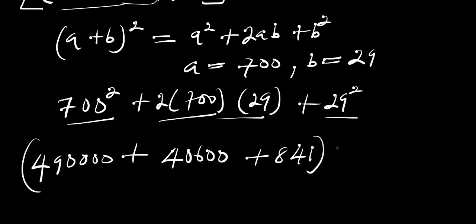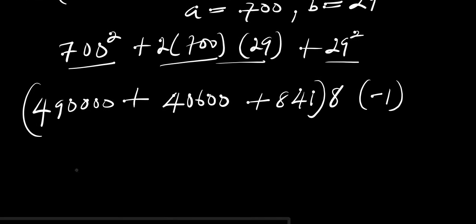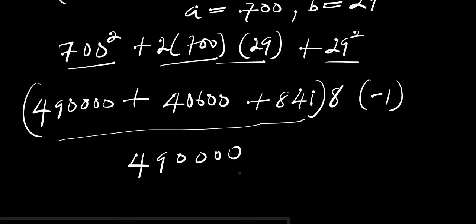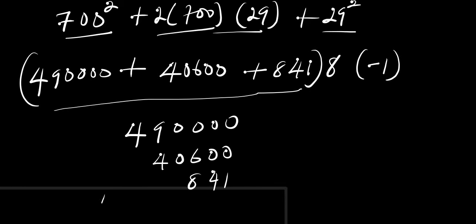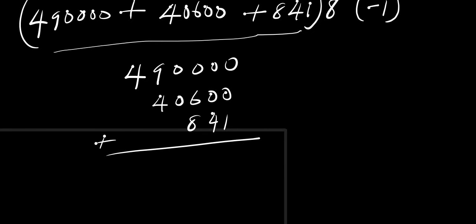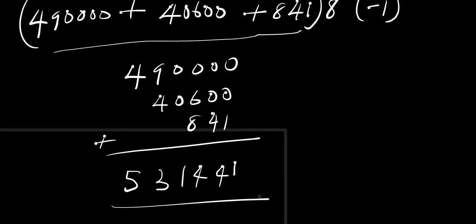The next step is to add up everything: 490,000 plus 40,600 plus 841. Adding these up: 0 plus 0 plus 1 is 1; 0 plus 0 plus 4 is 4; 0 plus 6 plus 8 is 14, write 4 carry 1; 0 plus 0 plus 1 is 1 plus carry gives... working through the addition, we get 531,441. This result will then be multiplied by 8 and also by negative 1.